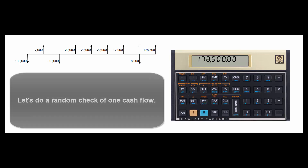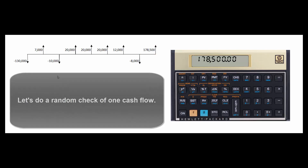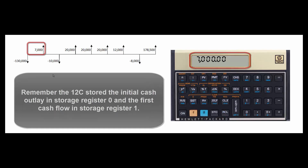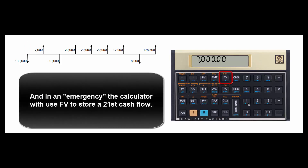Let's check ourselves — let's see what the cash flow at register one is. Hit Recall, then 1. Sure enough, there's $7,000. As mentioned, the calculator uses memory registers to store these cash flows. If it runs out of registers, it uses the FV key to store one final cash flow.